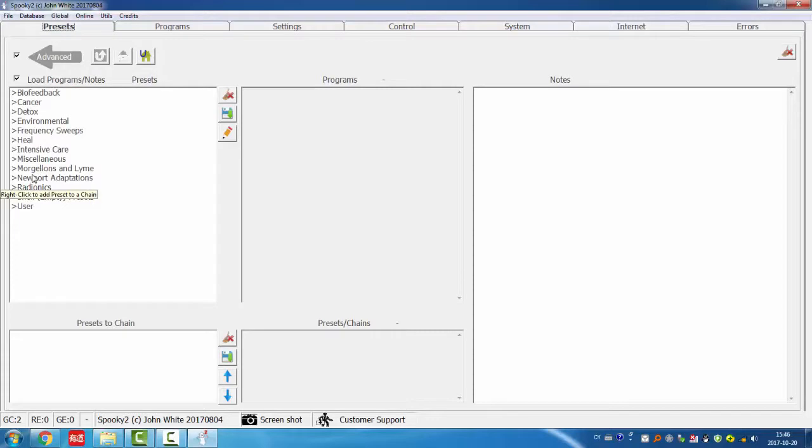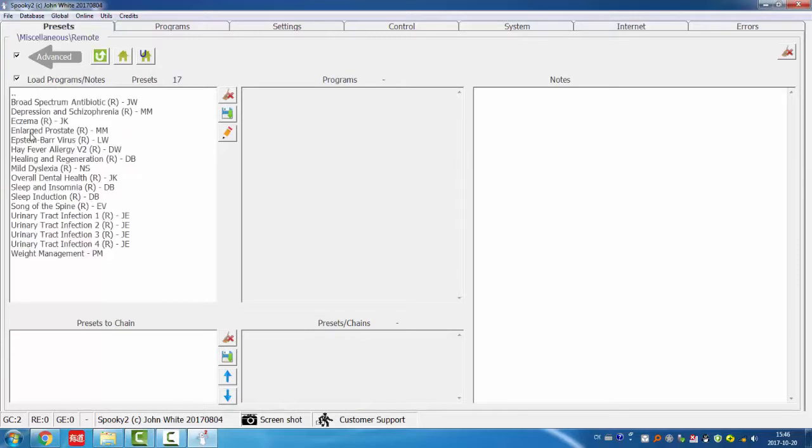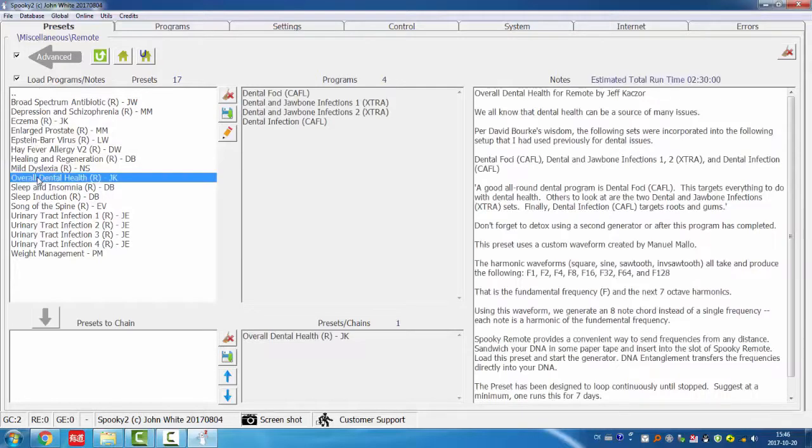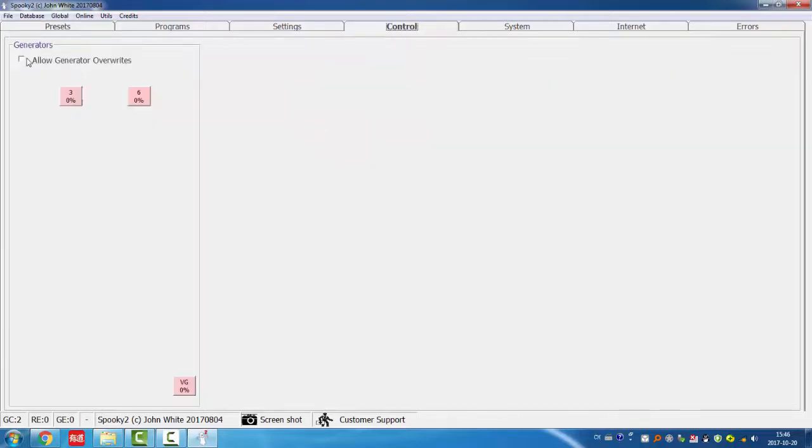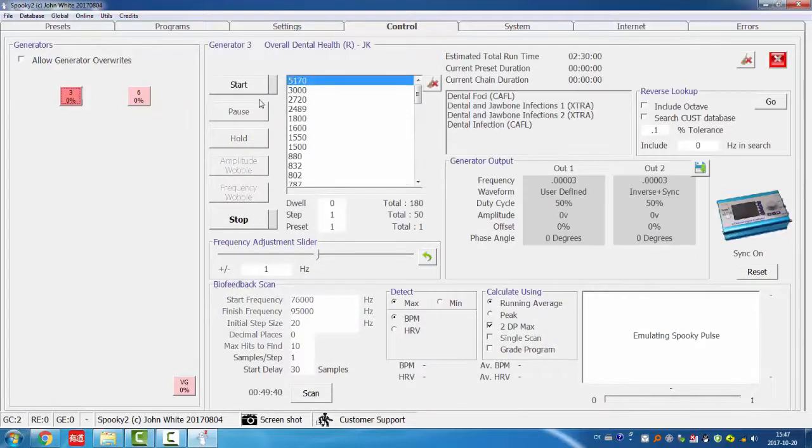Ok, now I will choose presets for my generators. So I want to use overall dental health for the first generator. I go to control tab, take a long generator overrides and open a generator. And click start.